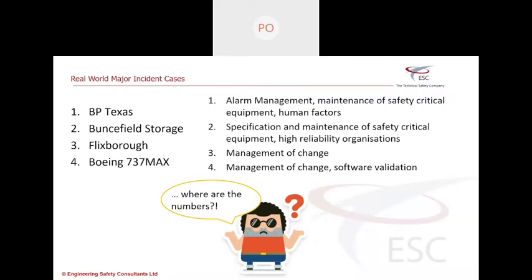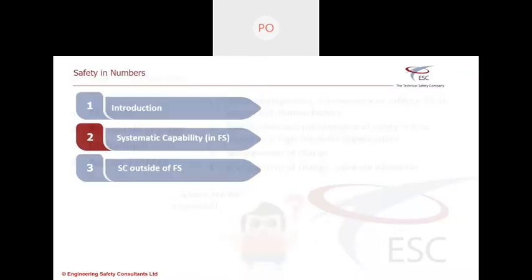So in this part, I'm going to take you through how in the context of functional safety, systematic capability is used to address those causes, those things that drove those incidents.